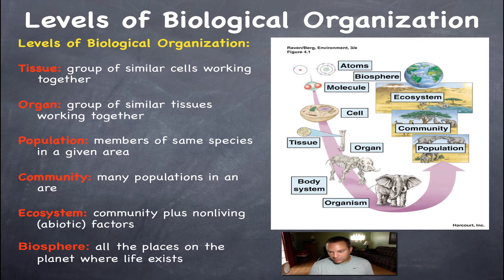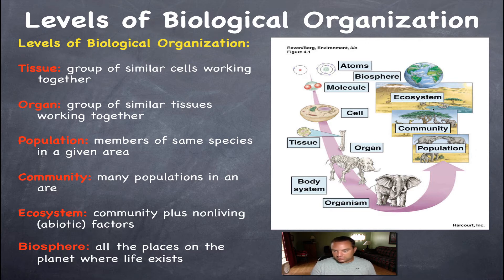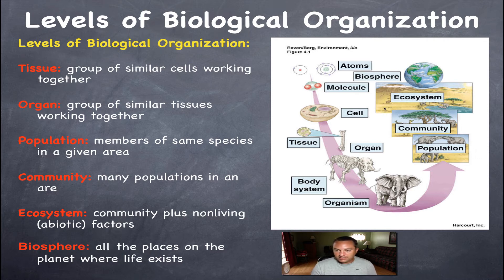When you put different communities together along with the non-living factors — the water, the air, sunshine, dirt, etc. — that creates an ecosystem. What we see in this picture is essentially an African savanna: you've got elephants, what looks like a lion, a hyena, trees, and grass — that is your ecosystem.